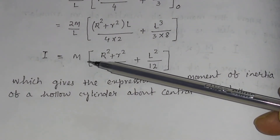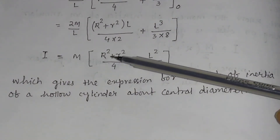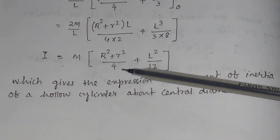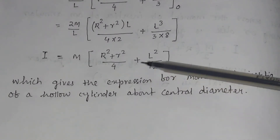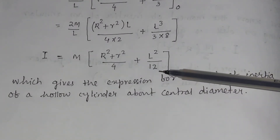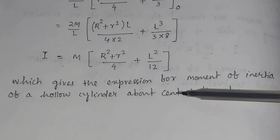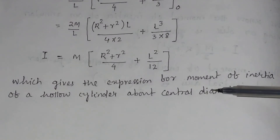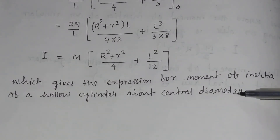Putting in the limits and solving, I equals m times (R² + r²)/4 plus l²/12. This is the expression for the moment of inertia of a hollow cylinder about the central diameter.